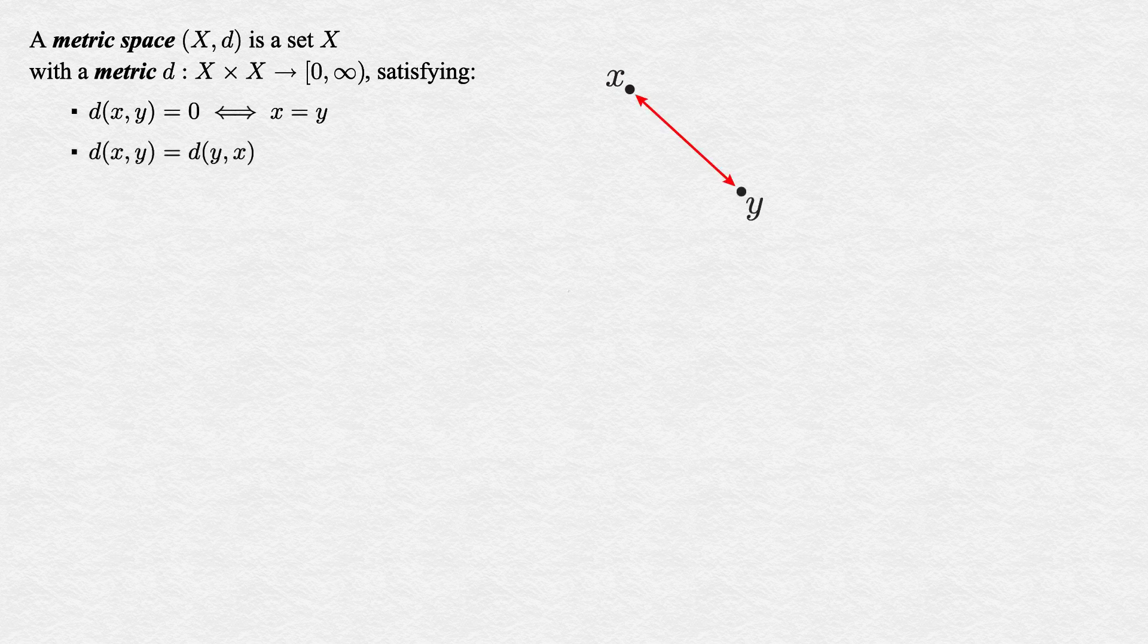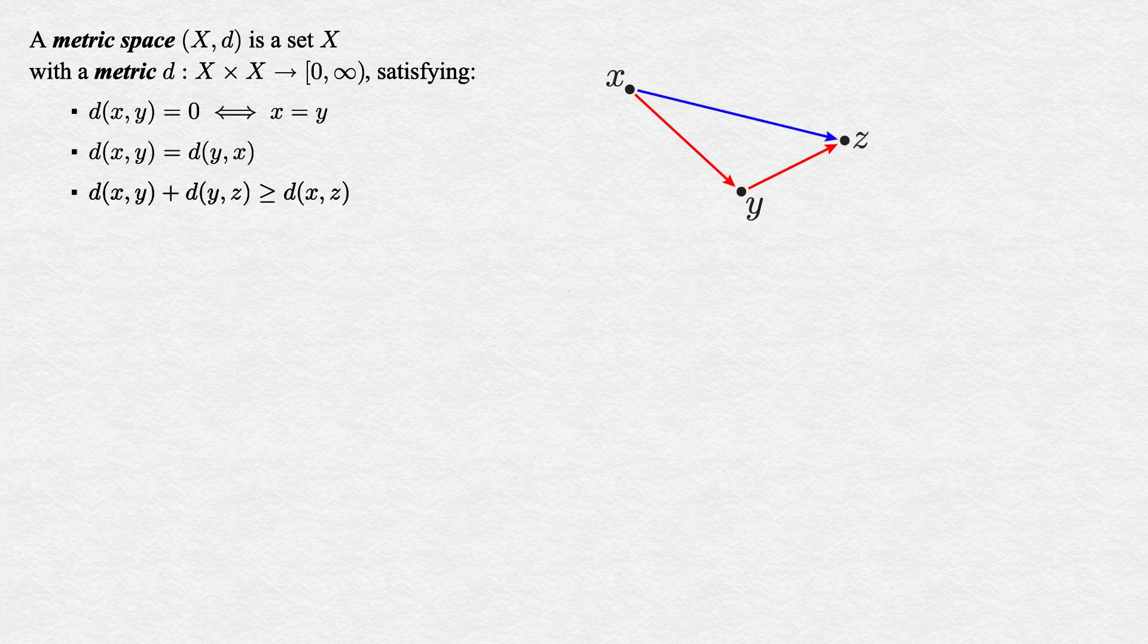Second, order shouldn't matter. The distance from x to y must equal the distance from y to x. Third, the distance between two points can't be made smaller by a stop in the middle. The total distance going from x to y to z must be at least as large as the direct distance from x to z. This law is called the triangle inequality due to its connection to the fact that one side of a triangle can be no longer than the sum of the other two.